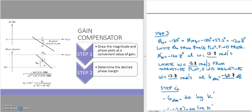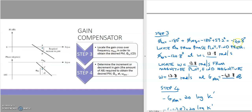The designed phase margin is determined by the equation: negative 180 degrees plus the required phase of 59.2 degrees, giving a designed phase margin of negative 120.8 degrees. We then locate negative 120.8 degrees on the phase plot and find the corresponding frequency. This is why the formula is negative 180 plus required phase. In my case, from my phase plot, the frequency is 13.8 radians per second at negative 120.8 degrees.